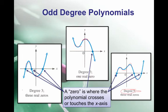A zero is a synonym for crossing or touching the x-axis. It's also called a solution and an x-intercept. These words can be used interchangeably: zero, solution, and x-intercept.